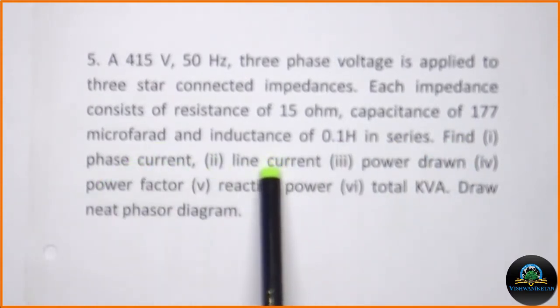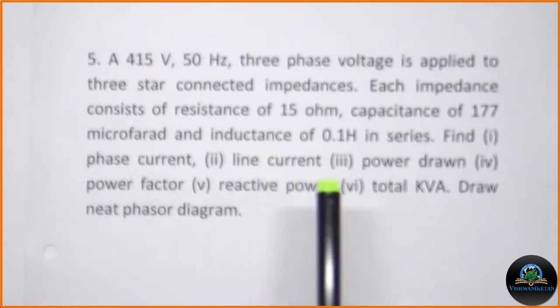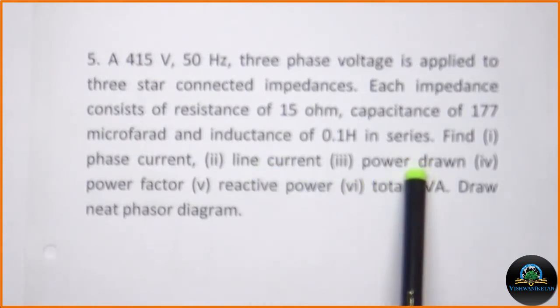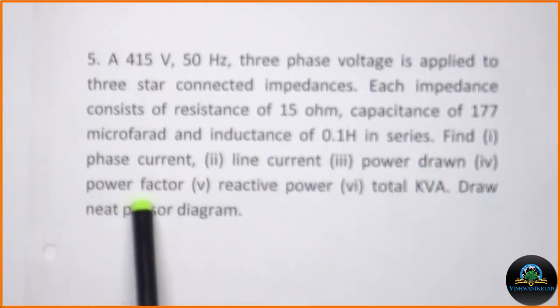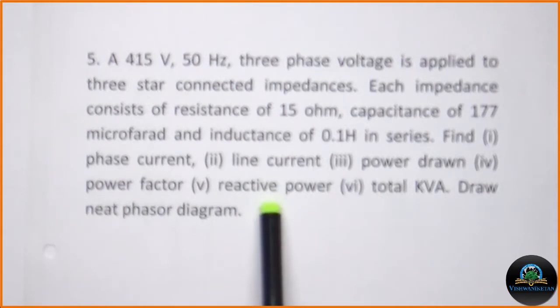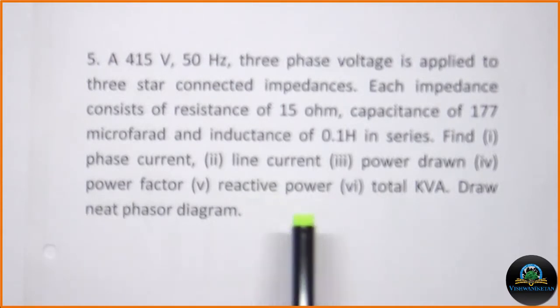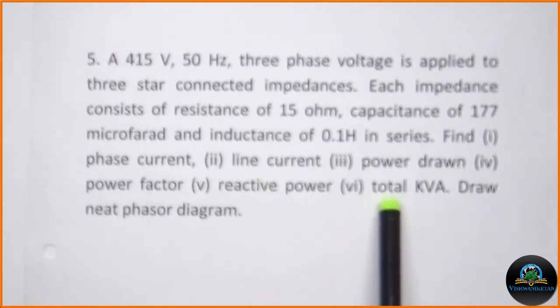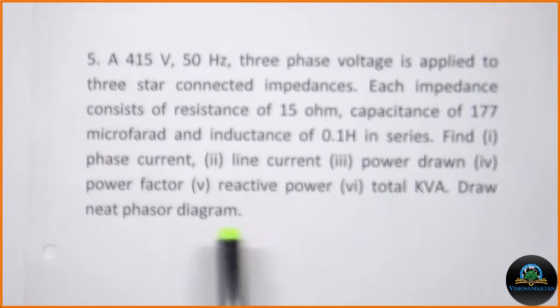We need to find: number 1, phase current; number 2, line current; number 3, power; number 4, power factor; number 5, reactive power; number 6, total kVA; and draw a neat phasor diagram.